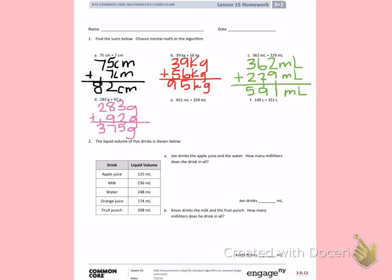Letter E. 451 milliliters plus 339 milliliters. I will write down the problem making sure to line up my numbers in the 100s place, 10s place, and 1s place. 9 plus 1 is 10. 5 plus 3 is 8, plus 1 more on the bottom is 9. 4 plus 3 is 7. 790 milliliters.